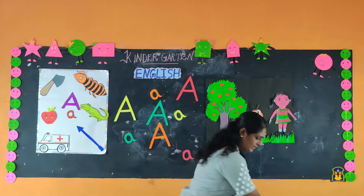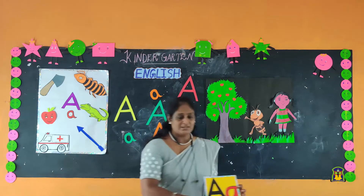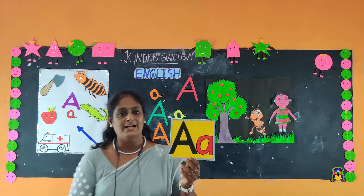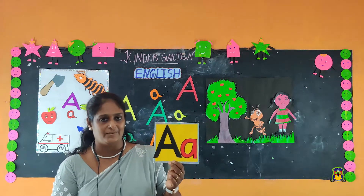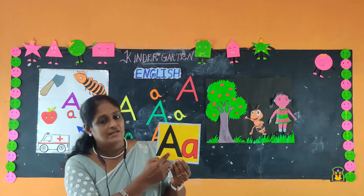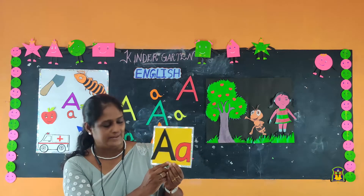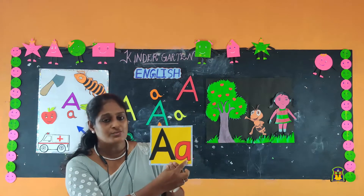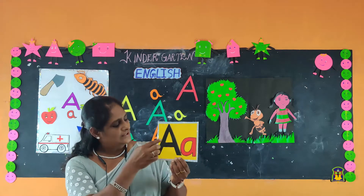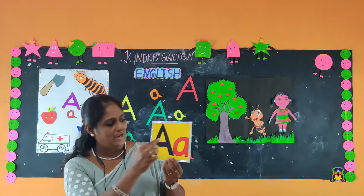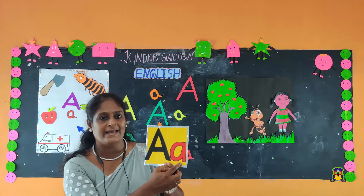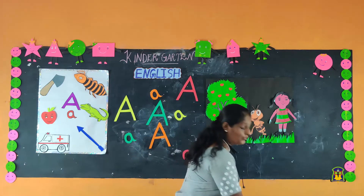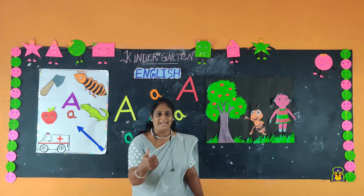See, children. Today we are going to learn the first letter of the English alphabet. This letter is called A — capital letter A and small letter A. Today we are going to learn the letter A through an interesting story. Are you ready?